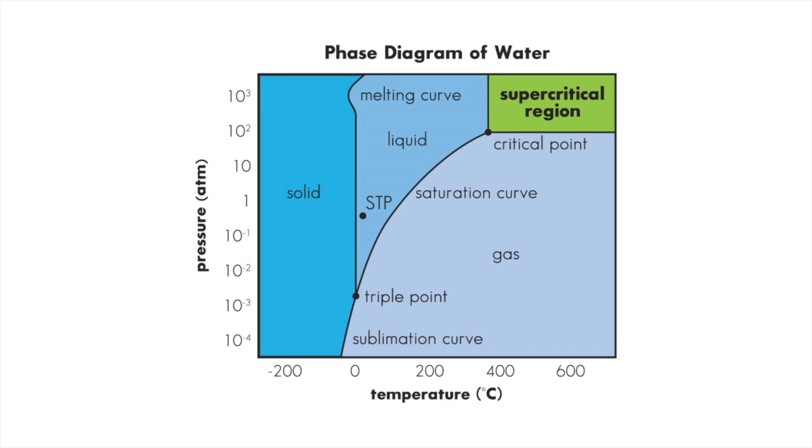And if you squeeze it harder, you can condense it back. And you can go back and forth like that as you increase in temperature up to a point, the point that they call the supercritical point.